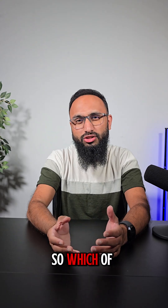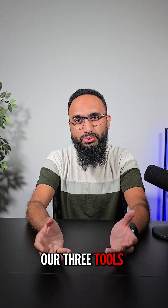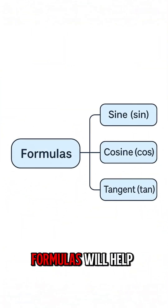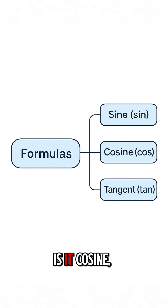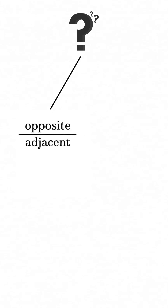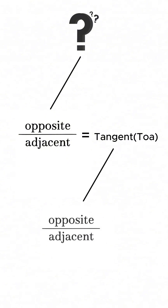So which of our three tools — the three formulas — will help us? Is it sine? Is it cosine? Or is it tangent? Which one links opposite and adjacent? That's right, it's tangent. TOA — opposite over adjacent.